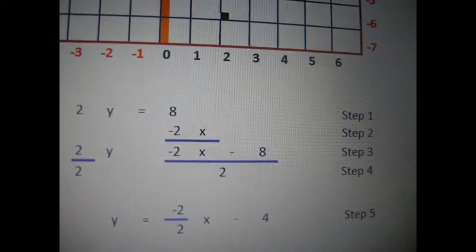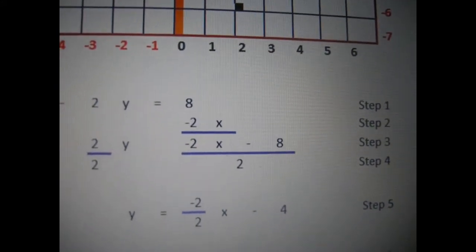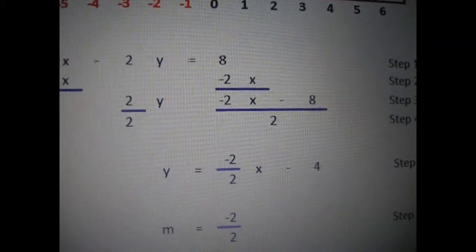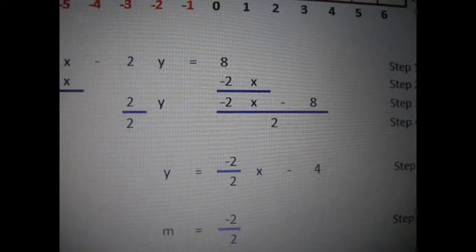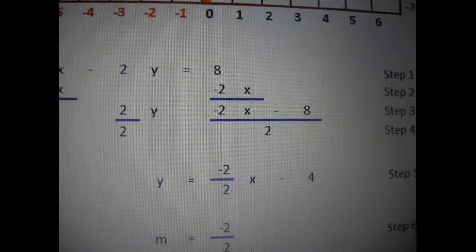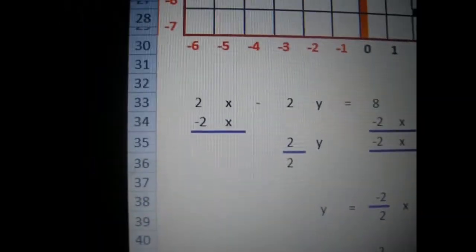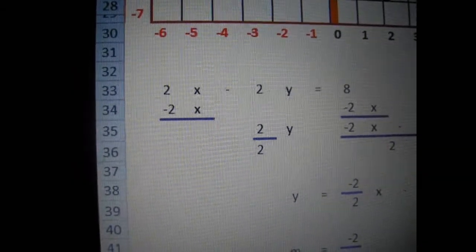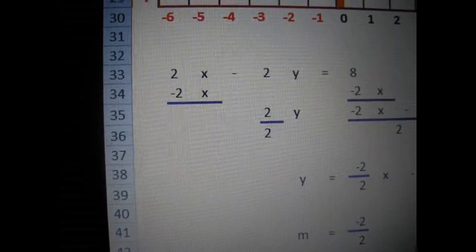Now, under the eight, we need to do the same thing, but instead of getting rid of it, we bring it down. So it becomes negative 2x minus eight. Now we need to bring down the y. So we have negative 2y.